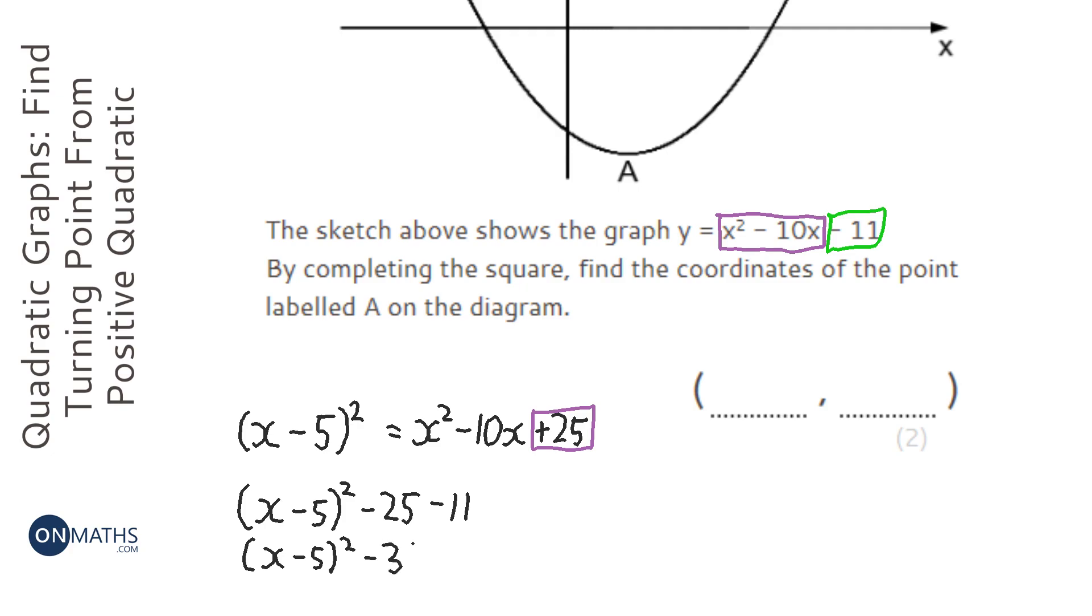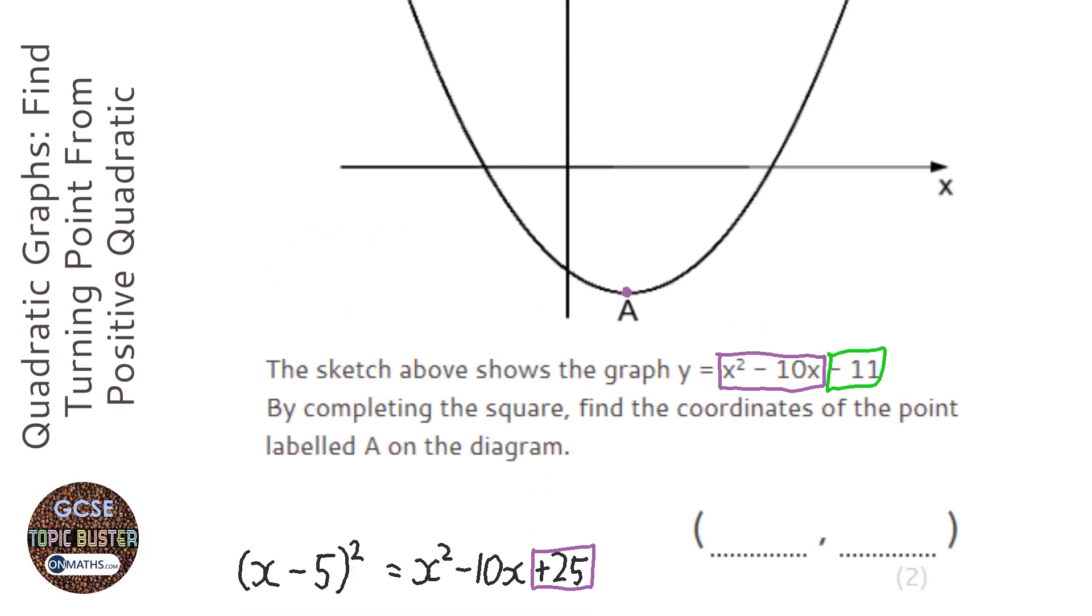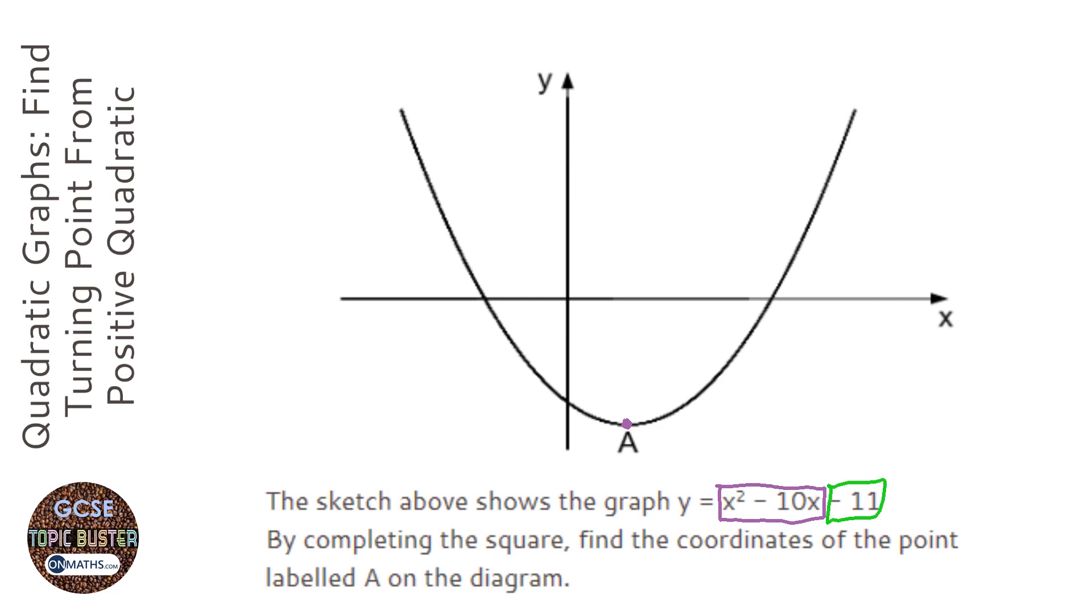So we need to find the minimum point here. Now the way of doing this question, a way of thinking about it, is if you imagine the function y equals x squared. Y equals x squared looks something like that.